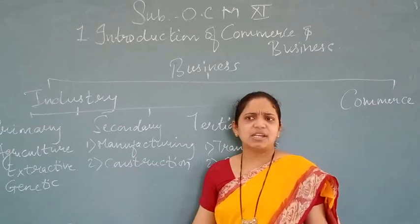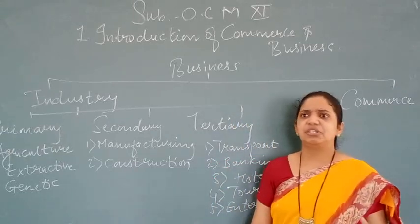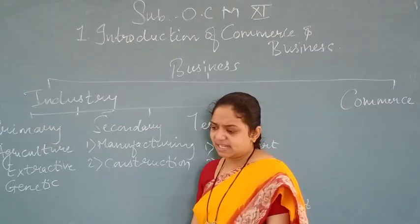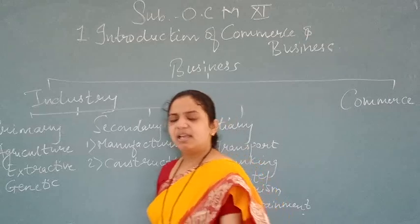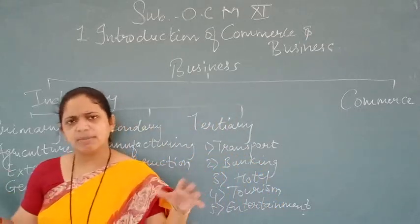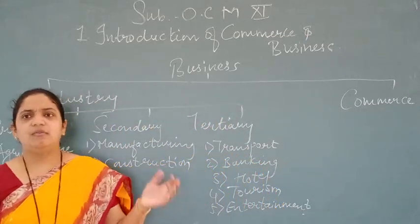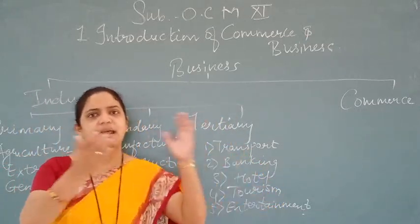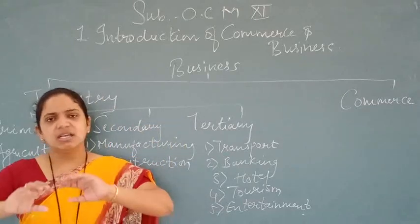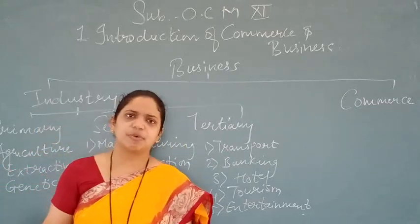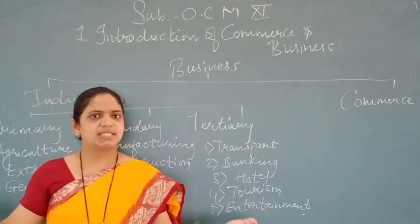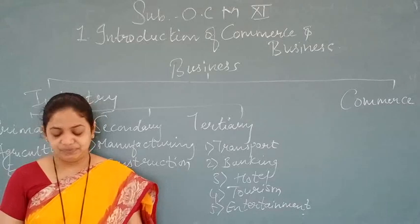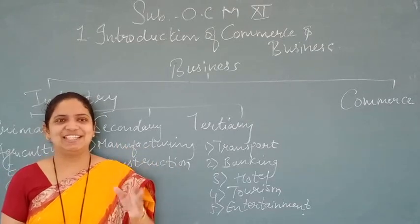Secondary is further divided into two: manufacturing and construction. Manufacturing industries engage in transforming raw material into finished products using machines and manpower. Examples include textiles, sugar, and paper industries. When sugarcane is produced on the farm it is primary, but when it is brought into the secondary and converted into sugar and jaggery, that is manufacturing industry.